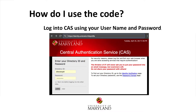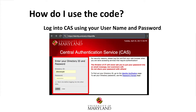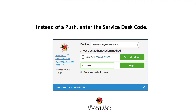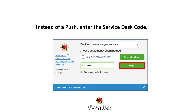Once you have called the Service Desk and acquired a one-time use code, visit identity.umd.edu/mfaprofile. Enter your university directory ID and password, then select Login. Instead of sending a push, enter the bypass code you received from the Service Desk, then select Login.